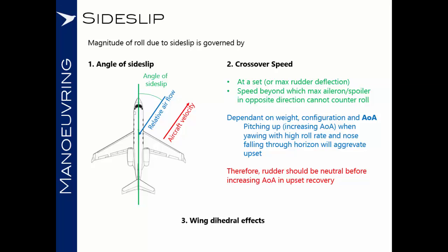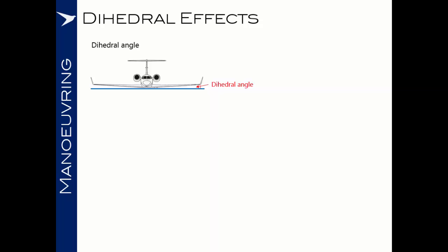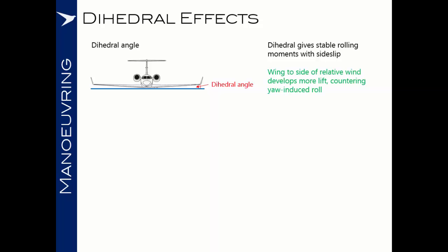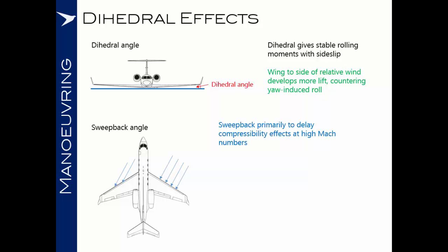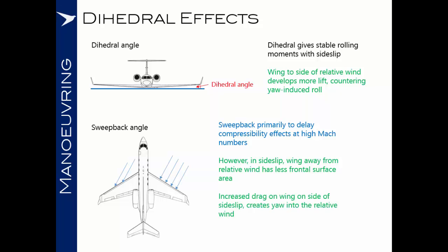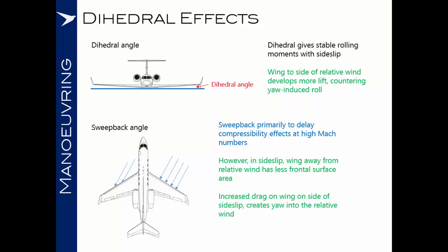The third factor influencing roll rate due to sideslip is wing dihedral effects. Dihedral describes the angle at which the wings are mounted on the fuselage, and it gives us a stable rolling moment with sideslip — the wing on the side of the relative wind develops more lift and counters the yaw-induced roll. Sweepback angle is also significant; whilst its primary purpose is to delay compressibility effects at high Mach numbers, it also has a dihedral effect. The wing furthest from the relative wind has less frontal surface area and produces less lift, and the increased drag on the wing on the side of the sideslip creates a yaw into the relative wind.